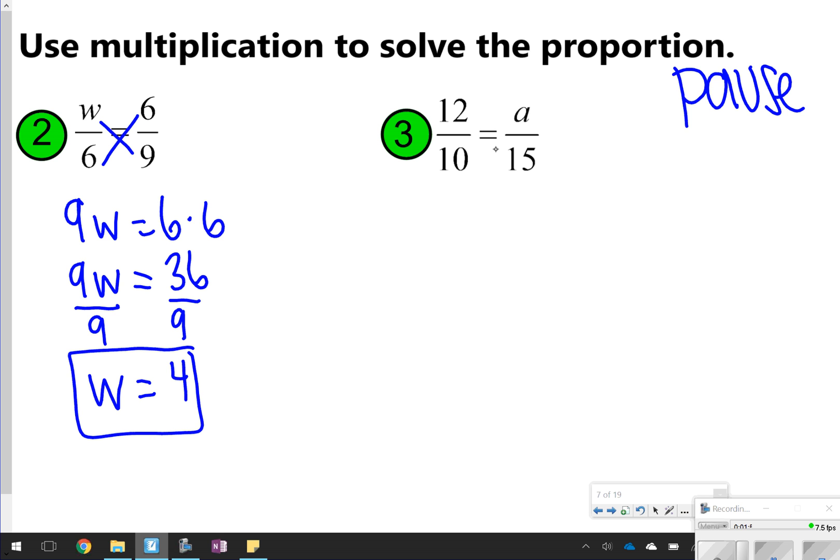For number 3, again, cross-multiplying, 10 times a and 12 times 15. 10 times a is 10a, and 12 times 15 is 180. And then I'm going to divide both sides to isolate the variable. a is equal to 18.